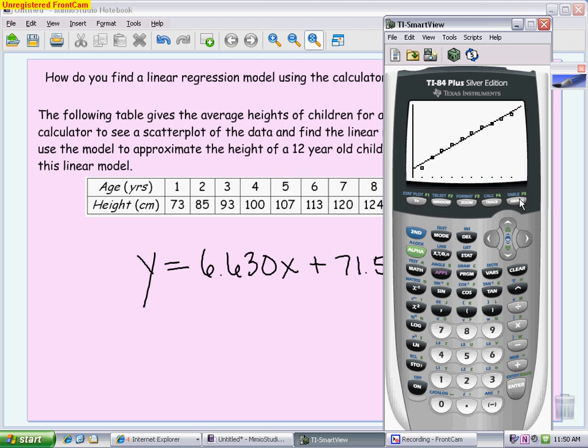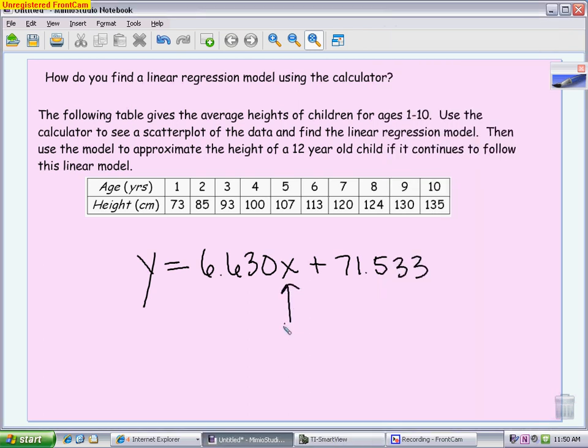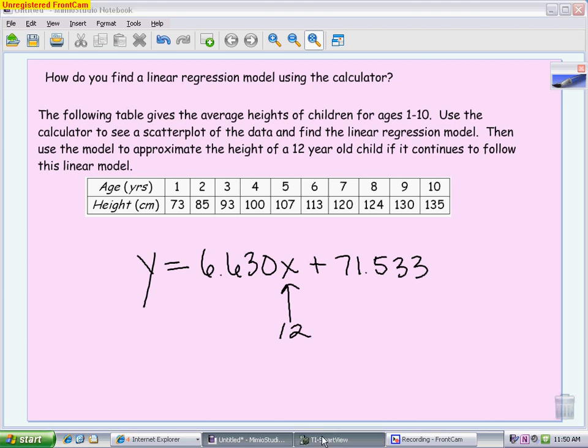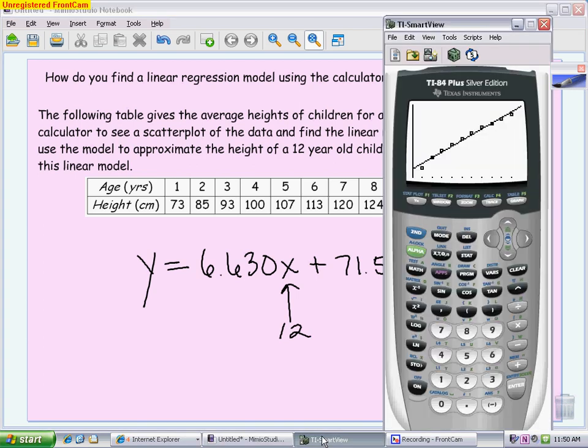Finally, if you want to use the line of best fit, this one said what would the height be of a 12-year-old. One option is by hand, it won't be quite as accurate, is to enter a 12 in where you see an X. So take your value times 12 plus 71.533 and get an answer. If you want to keep the accuracy and not round it to a couple digits, you can have the calculator do it for you with that line.